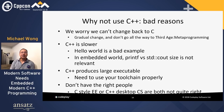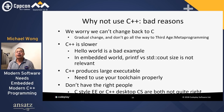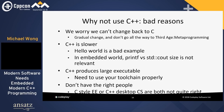Some bad reasons not to use C++: people worry they can't change back to C. The idea is you could do it gradually. You might worry that C++ is slower — Hello World is a bad example. In the embedded world, printf and cout comparisons aren't really relevant. C++ produces large executables — that's another bad reason; you have to use your tool chain properly. You might say you don't have the right people — C-style electrical engineers or C++ computer scientists are both not quite right.